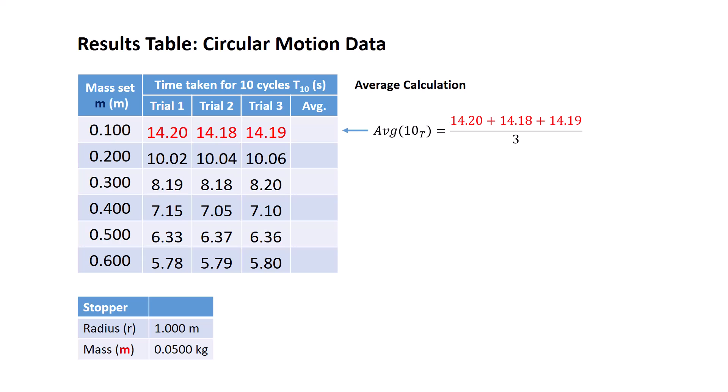Let's examine how we've done this for the 100 gram mass set. We take trial 1, trial 2, trial 3, we add them together and divide by 3. So it's simply working out the average for each particular mass set. And we do that.